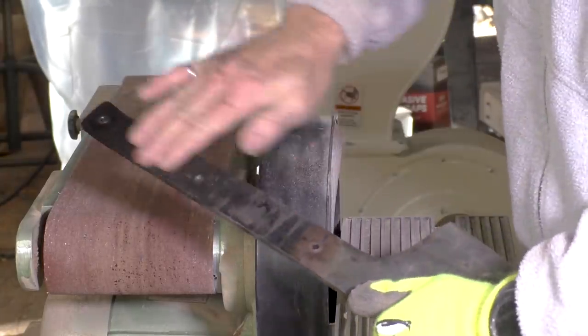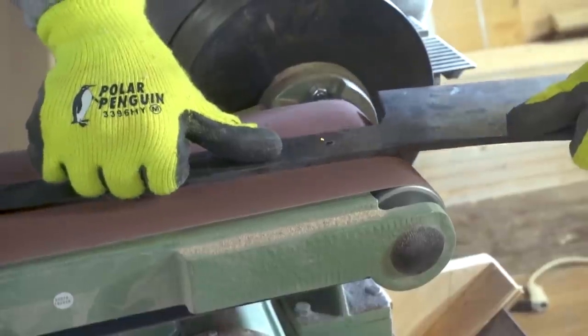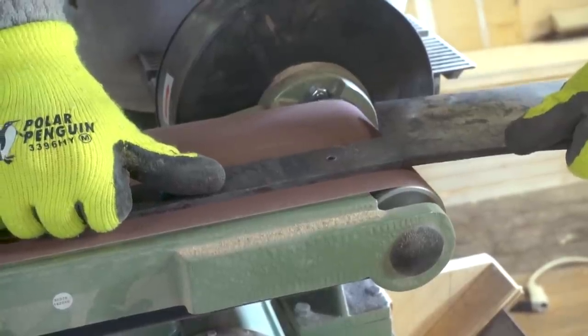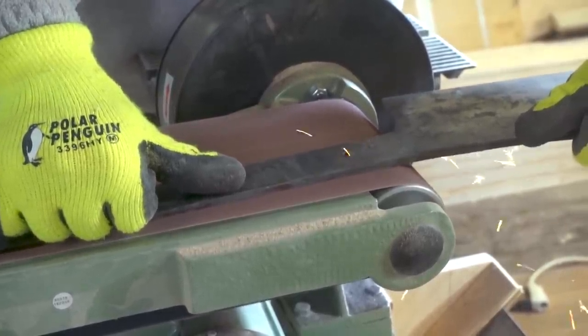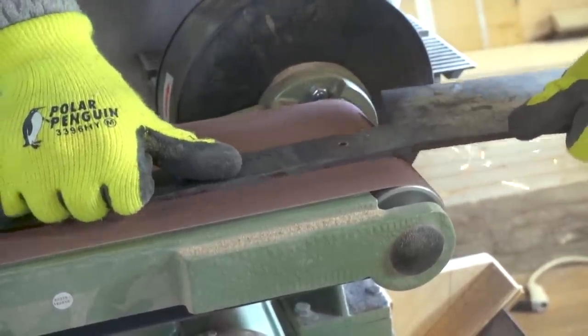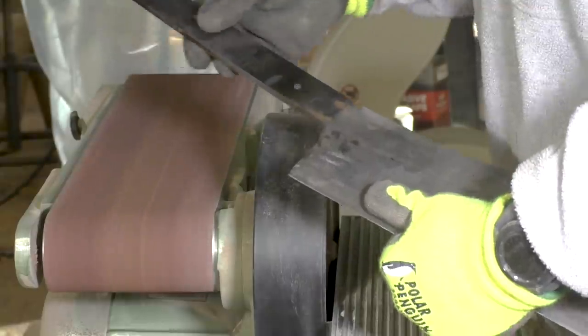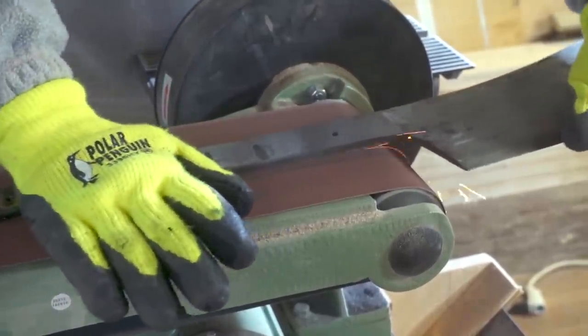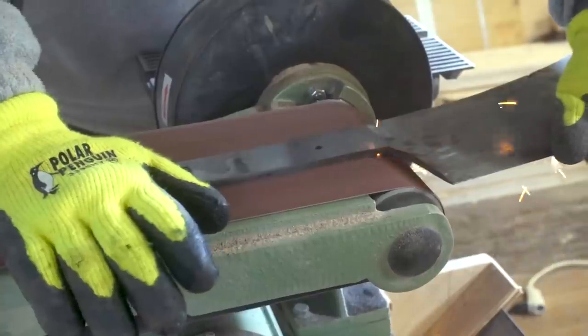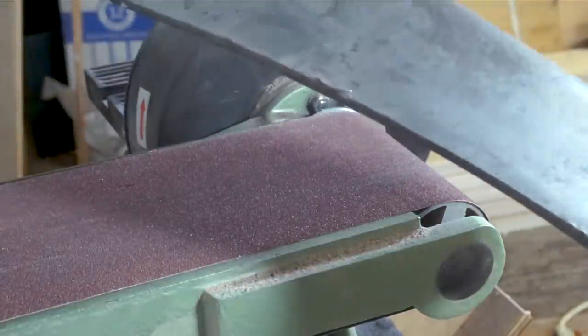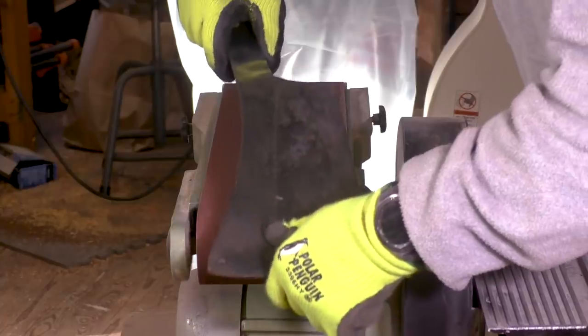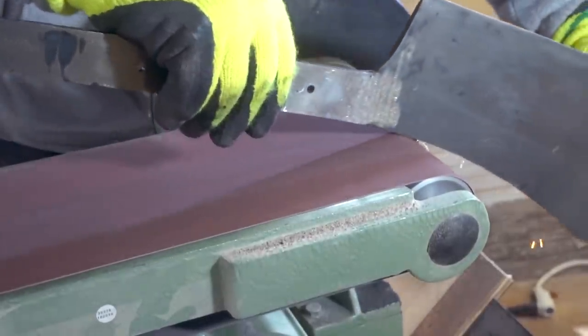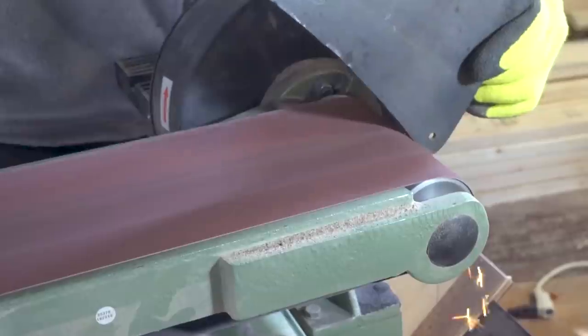And now it's just a long process of sanding. I'm starting with the tang to make it flat and then I'll get to work on the blade. I cleaned up the spine the best I could without removing too much material, but I wanted to get those big nicks out of it.